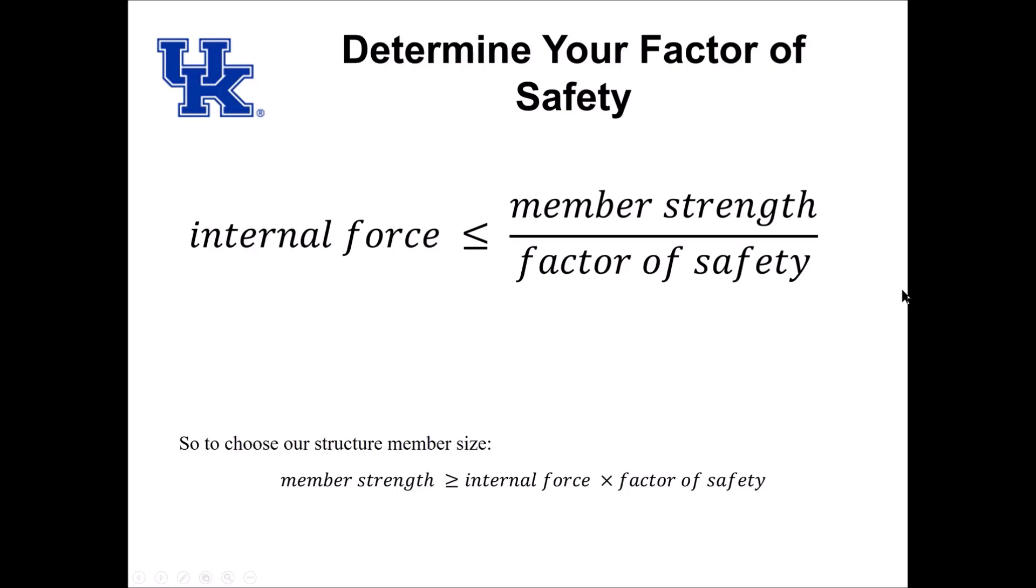Just for reference, here's how you calculate your factor of safety. You take your mathematical calculated force of your member, then take the member you're going to place in there and its strength, and divide it by its factor of safety. That's going to have to be greater than its internal force. For reference, your internal force times the factor of safety should be your member strength.